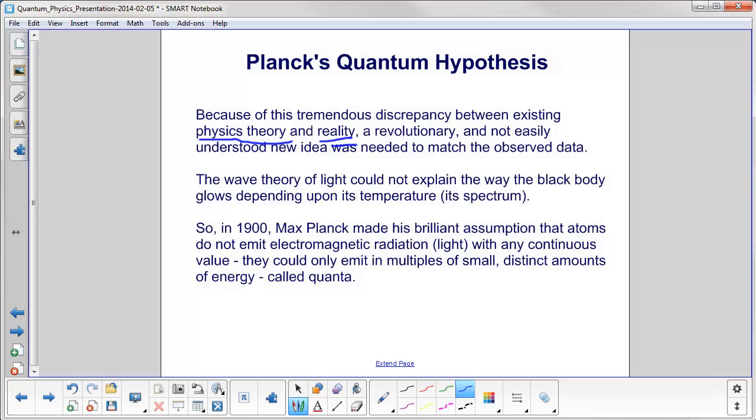So a new theory that wasn't quite understood very well and was quite revolutionary was required. The wave theory of light could not explain the way the black body glows depending upon its temperature, and remember, that's called its spectrum.